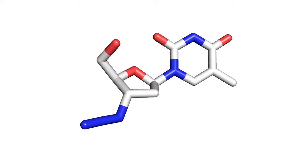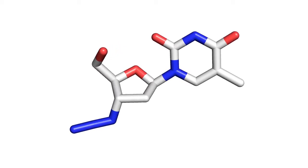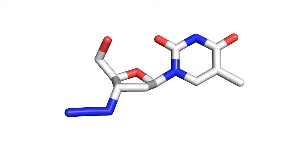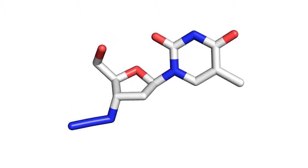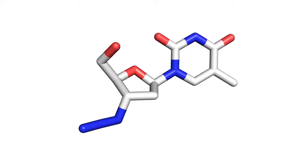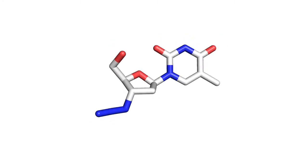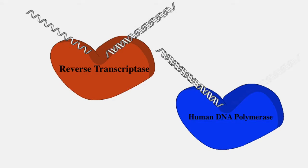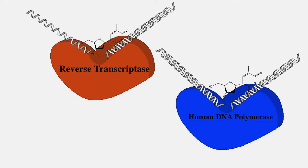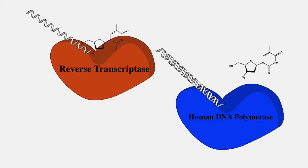AZT, also known as zidovudine, was the first US government-approved HIV treatment in 1987. It had the shortest time between discovery of activity and FDA approval in modern history — under 25 months. It antagonistically binds to DNA polymerases, replacing a nucleotide. Once incorporated into DNA, it ends the process of transcription and thus prevents further copying. The human body can repair this damage more effectively than HIV can, giving rise to selectivity.